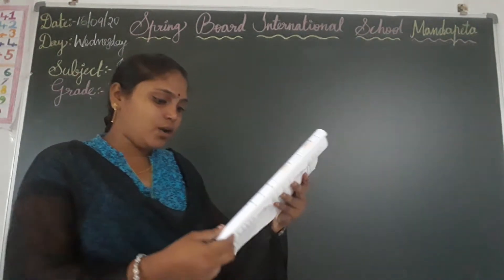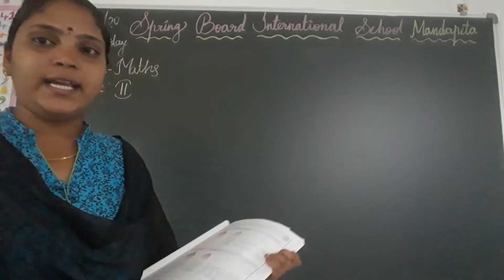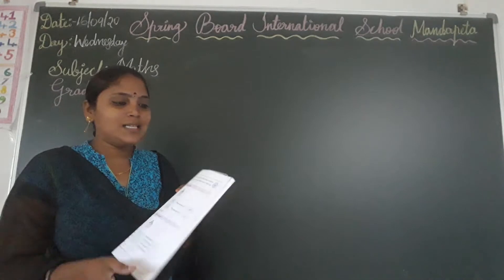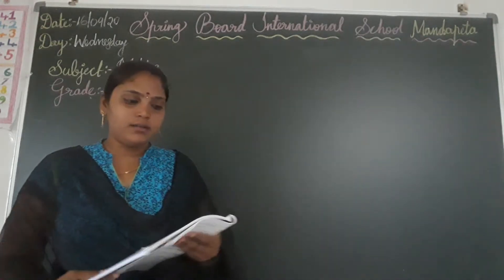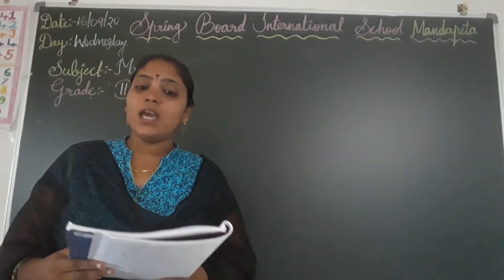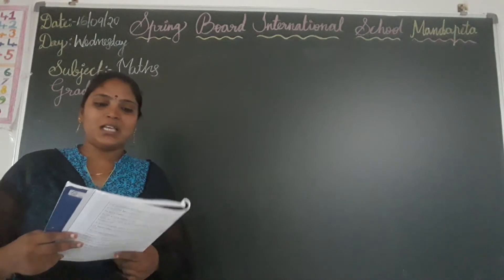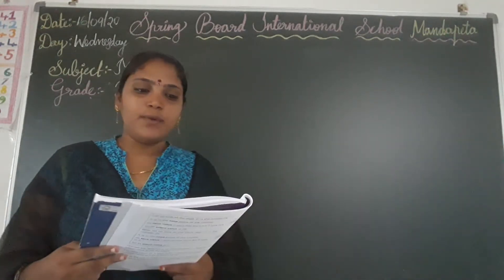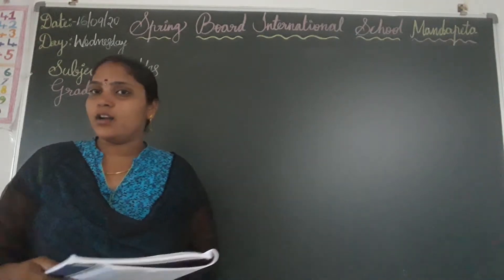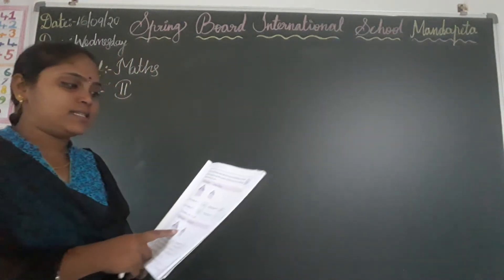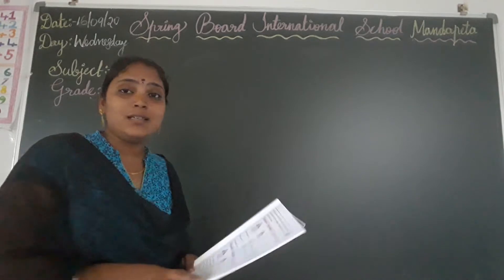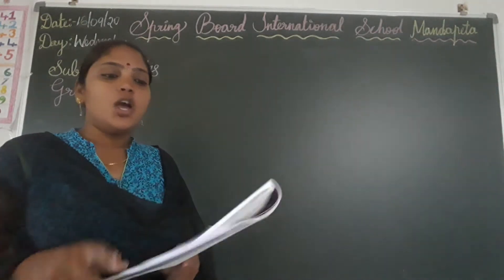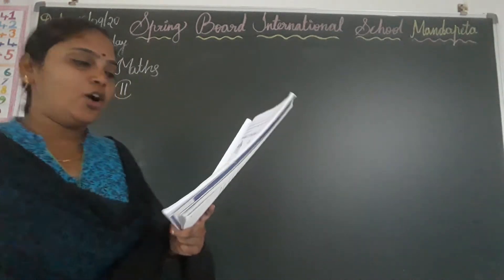Now everyone open page number 29. Observe exercise 2.5: Fill in the blanks with the face values and place value of the digits to get the number formed by them. One has been done for you. Here we have to write face value and place value of the digit, and the first one is completed already.